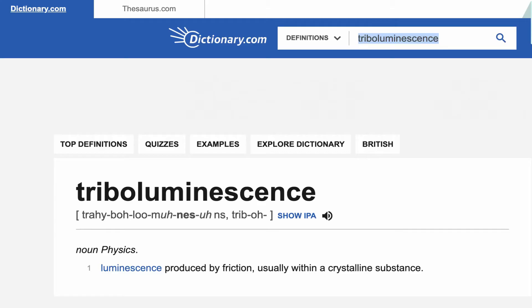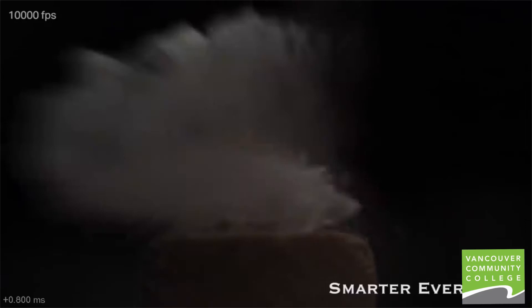Consider this: if I were to explain what triboluminescence is, I'd first have to explain luminescence, then friction, then the crystalline substance, and how they all interact — probably with an example. Or I could simply show you the lightning-like blue flash generated when a bullet struck the Life Saver candy. That is triboluminescence. What's better — my feeble attempt to explain and define it, or simply showing you that example?